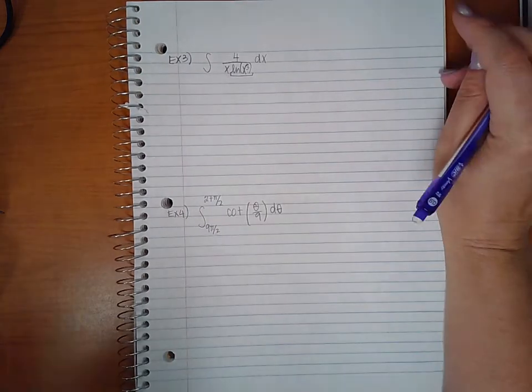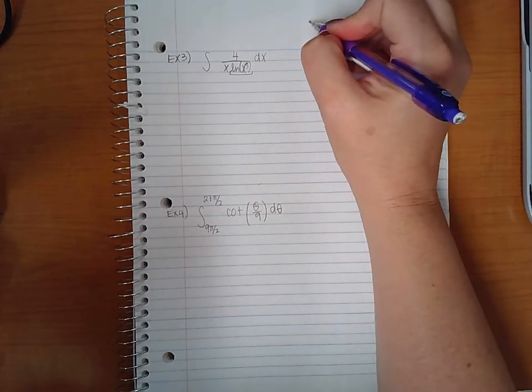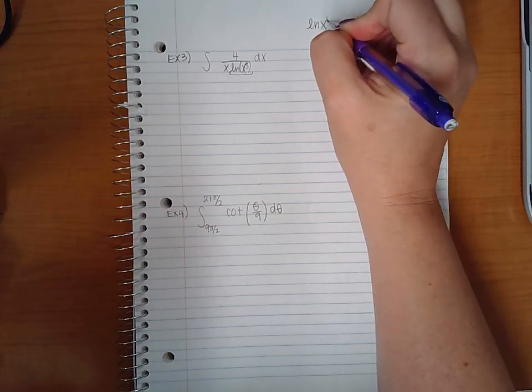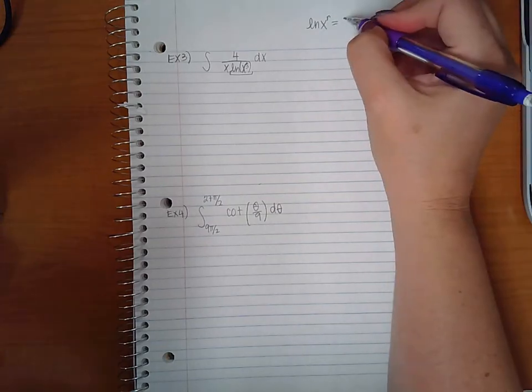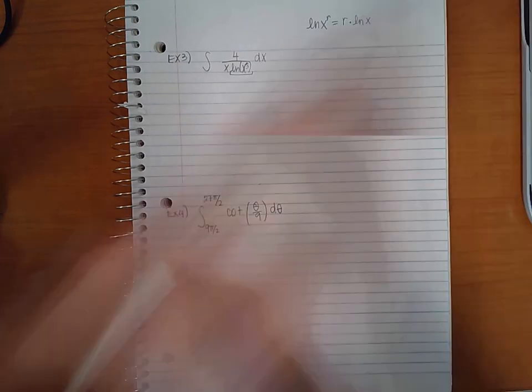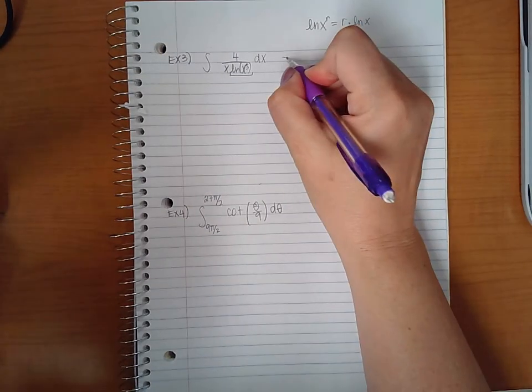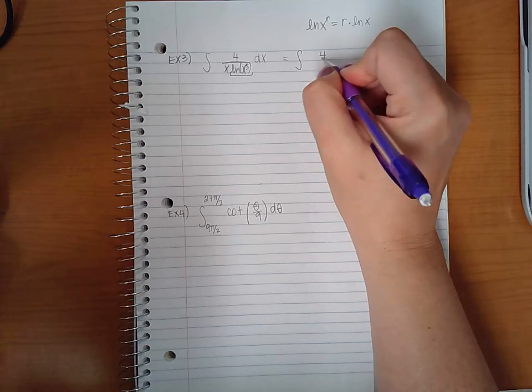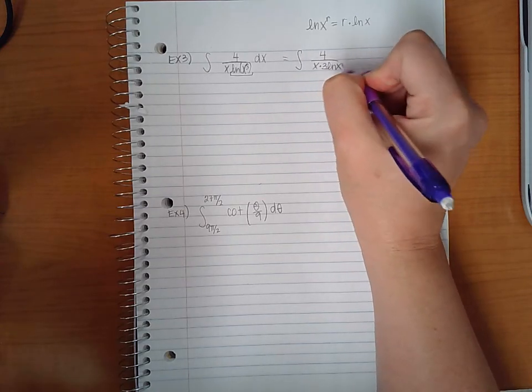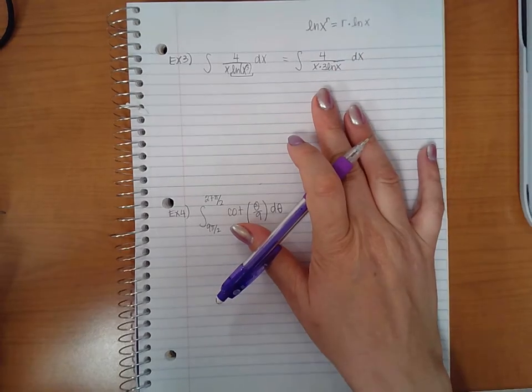However, we have properties in logarithms that say if you have the ln of an argument raised to a power, you can rewrite it as that power times the ln of x or whatever the argument is. So in this case, I could rewrite that as 3 ln of x.